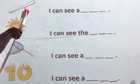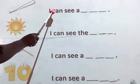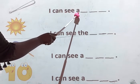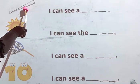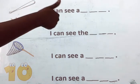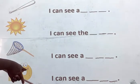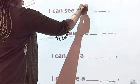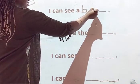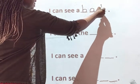What is this? A bat. So let's go: I, can, see, a, bat. Now, can you give me the sounds in bat? B, A, T — bat. So I'm going to write here: bat. B, A, T.